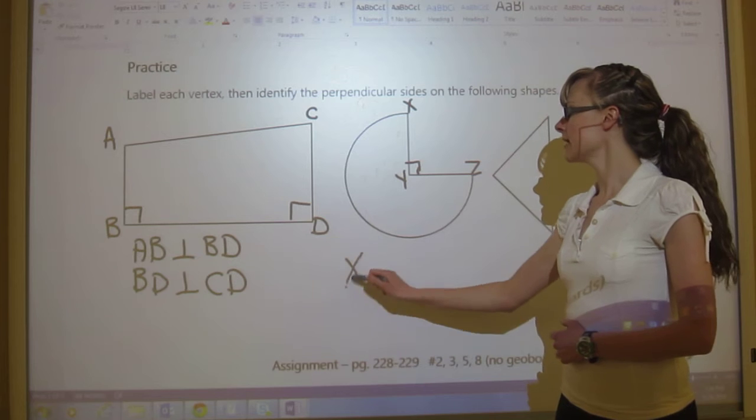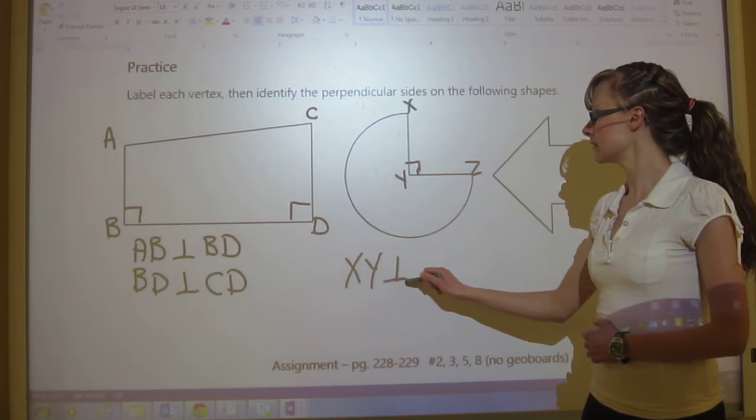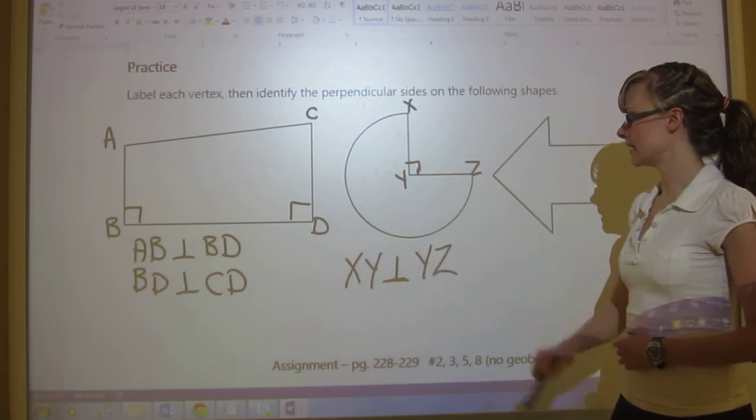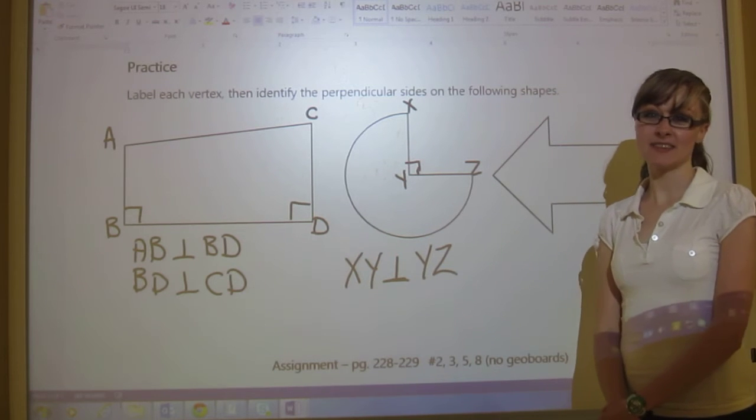So I see a perpendicular spot right here. So that means that XY is perpendicular to YZ. And that's it, there's no other ones.